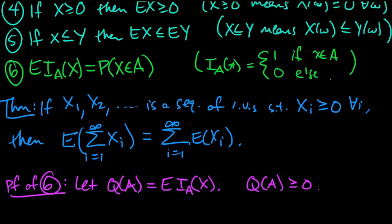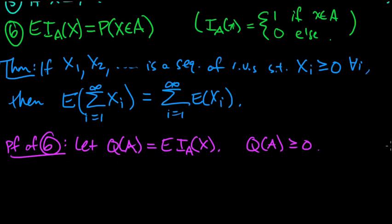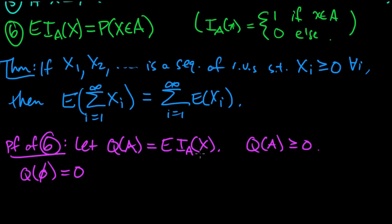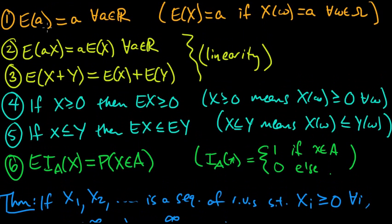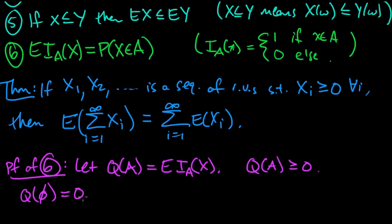The second property of a measure requires Q(∅) = 0. This is true because if A is the empty set, the indicator of the empty set is identically 0, since no element is in the empty set. The expected value of 0, by property 1, is just 0. So Q(∅) = 0, exactly as needed.